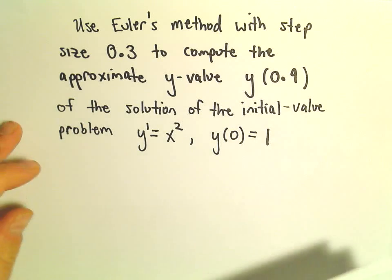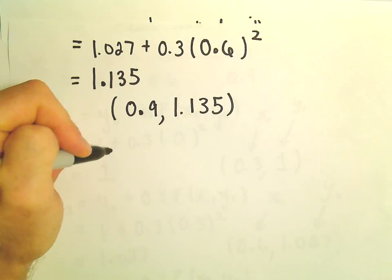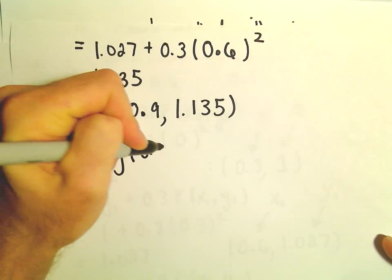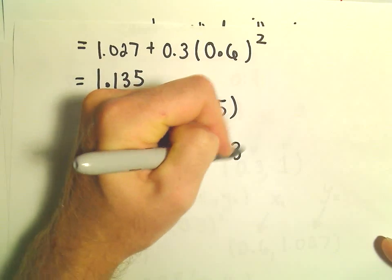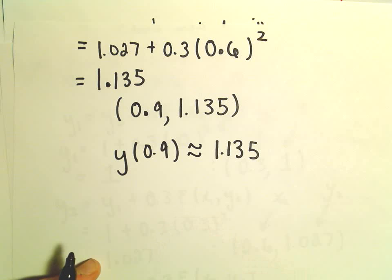So we've now approximated. So we could say y of 0.9, again, is going to be roughly equal to 1.135. Again, that's our approximation here using Euler's method.